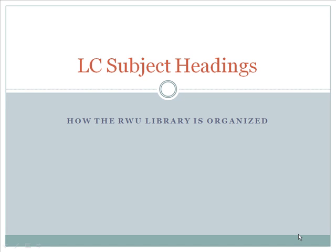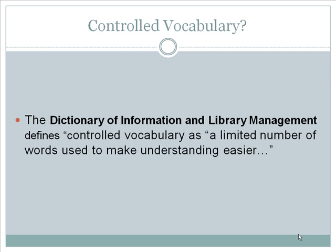The Library of Congress classification is a system that was first developed to organize and arrange the book collections of the Library of Congress. The system was later adopted for use by other libraries, especially academic libraries in the United States. It is one of the most widely used library classification systems in the world.